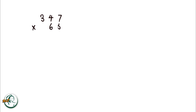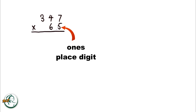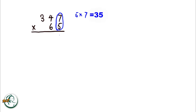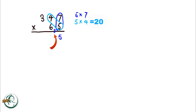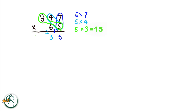Into another example: 347 times 65. Firstly, we'll start with the ones place digit, 5. 5 multiplied by 7 is 35; we write down the 5 and carry over the 3. Next, we multiply 5 by 4, resulting in 20. Adding the carried over 3 to 20, we get 23; we write down the 3 and carry over the 2. 5 multiplied by 3 is 15; adding the carried over 2, we get 17.